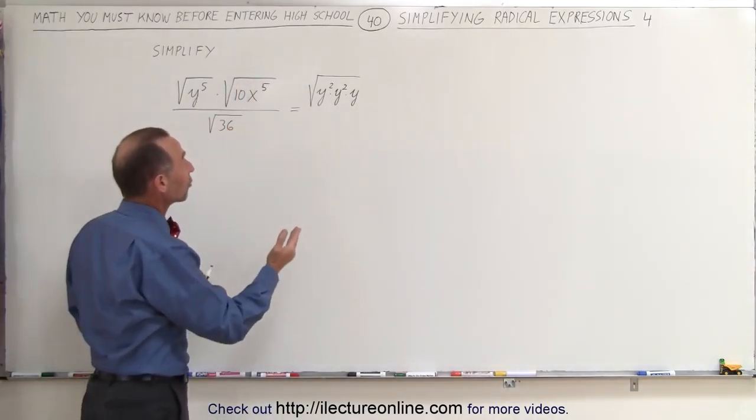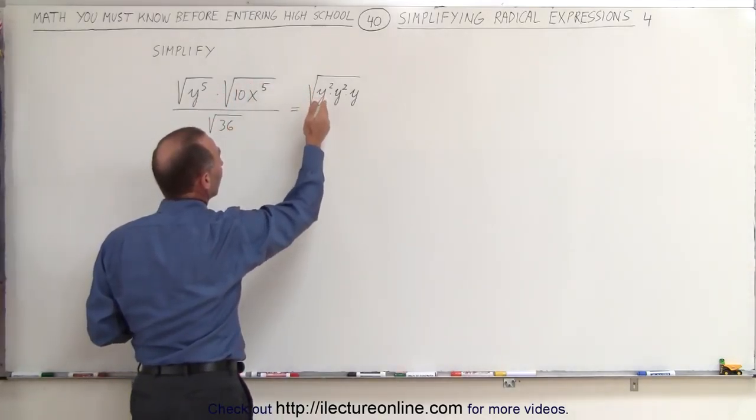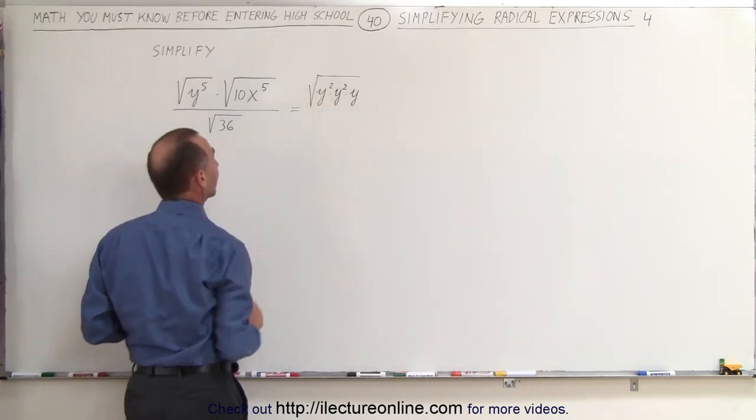Why did we do that? To illustrate that the square root of something squared can simply be taken outside the radical sign.